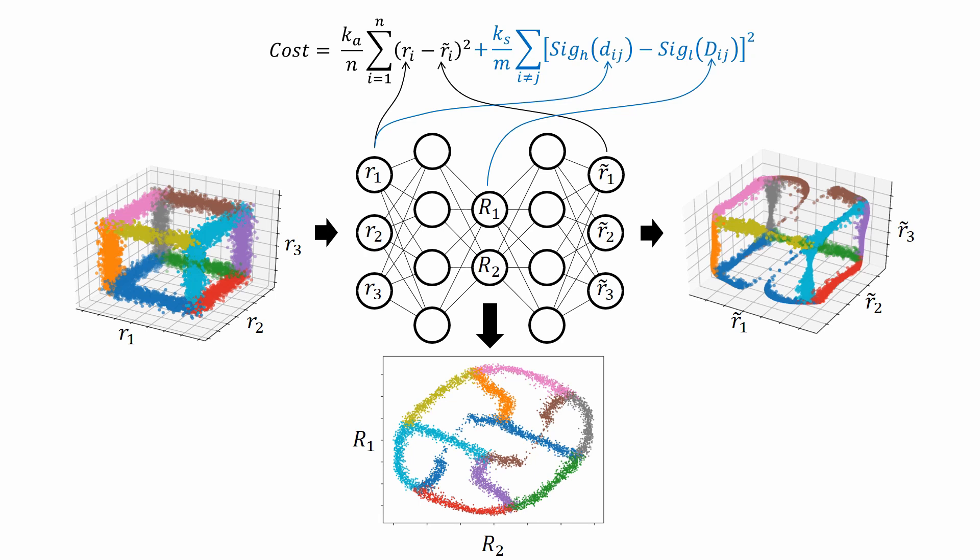You can see the influence of this addition to the cost function. The lengths of the cube edges are now better preserved, and consequently also the densities of the points are more even.